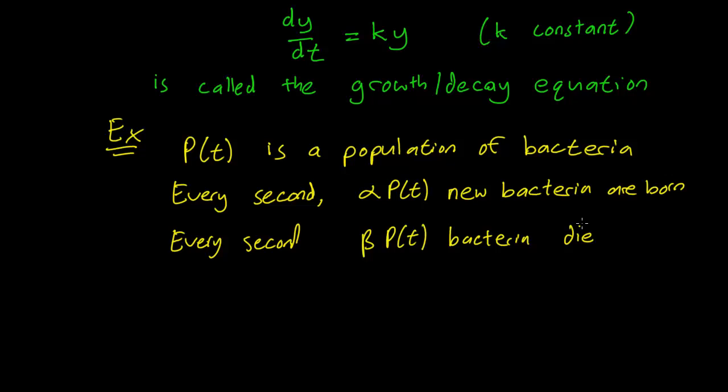So every second, you have alpha. You can think of alpha as a percentage, right? That alpha, a portion of the bacteria are born, and some portion of them die.